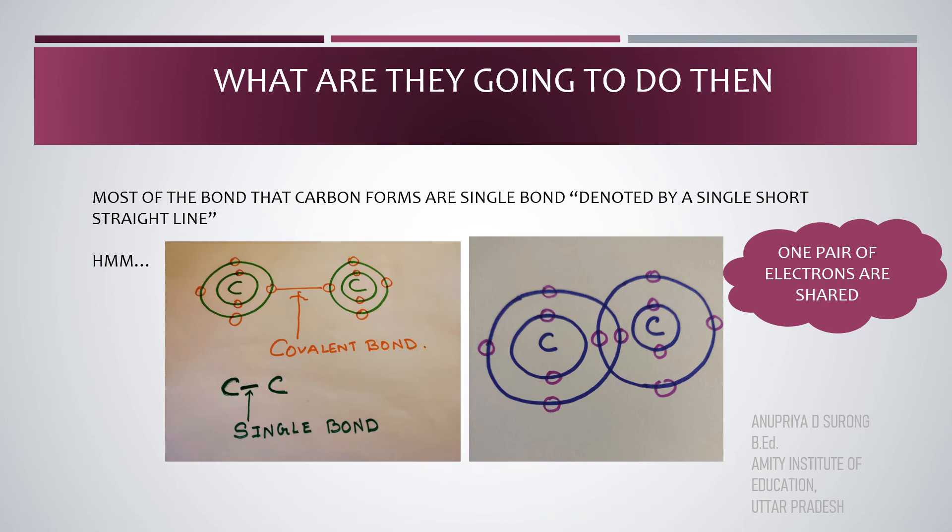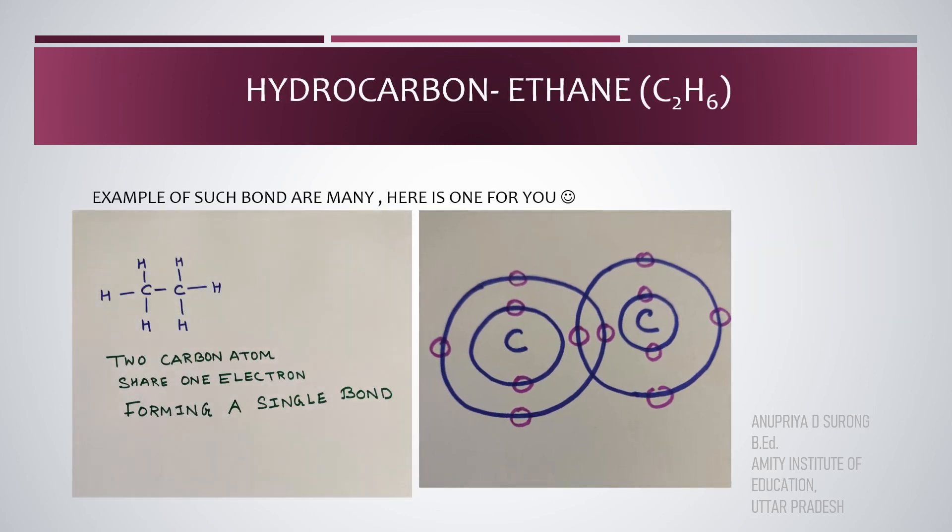Most of the bonded carbon forms are single bonds, denoted by a single short straight line. Look at this picture. These two carbon atoms, they share the electrons with each other and form the single bond, which is also called pair of bonding electrons. Easy, right? They share one electron from each other, forming a single bond. Same goes with the hydrogen atoms.